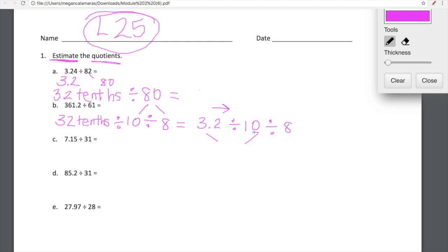So let's do this first. What is 3.2 divided by 10? 3.2 is going to shift one place value to the right because there's one zero in ten. When we shift 3.2 one place value to the right, Louis, what number do we end up with? Thank you sir, 0.32 or 32 hundredths. Now we need to divide 32 hundredths into eight equal groups. Do you guys see how this decomposition actually really helps us?